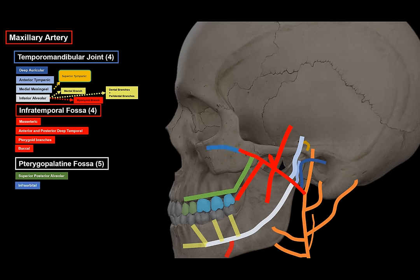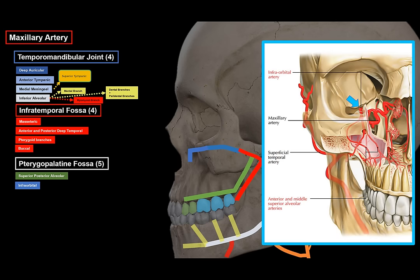Next is the infraorbital artery. It enters the orbital cavity through the inferior orbital fissure, travels through the orbit, and exits to the anterior region of the face through the infraorbital foramen. On its way it branches off an artery for the maxillary sinus, and the superior anterior alveolar artery, supplying the incisors, canine teeth, and gums. So for the upper teeth: the superior anterior alveolar and superior posterior alveolar arteries; for the lower teeth: the inferior alveolar artery.